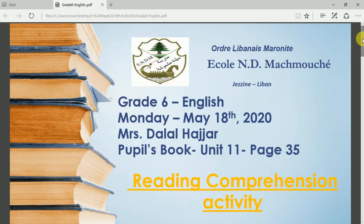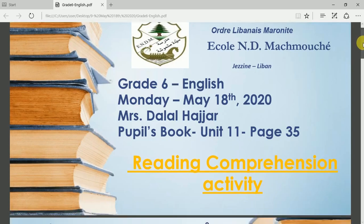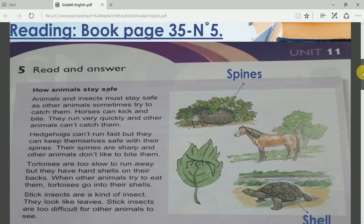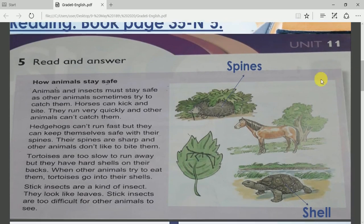I am going to read you the text one more time, explain it a little bit, and there are some activities and exercises that I want you to do. When you open page 35 number 5, you will see this text: Read and Answer. Pay attention please. How Animals Stay Safe.